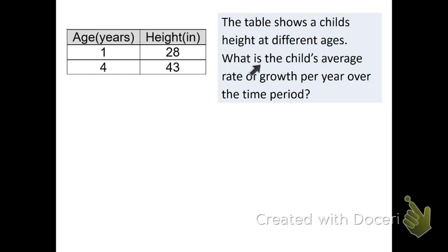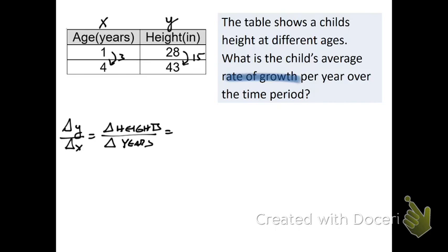We have this table that shows a child's height at different ages. What is the child's average rate of growth? So it doesn't explicitly say, but a rate of growth is going to be a rate of change per year. So in a table like this, our x is going to be the column on the left and our y is going to be the column on the right. So if we're trying to find our change in y over change in x, that's going to be the change in heights over the change in years. So what we would do is just find how much does y increase by as x increases by this amount. I could just look at it and tell that looks like a change of 15 and that looks like a change of three. So it looks like over the course of three years, the height increased by 15 inches.